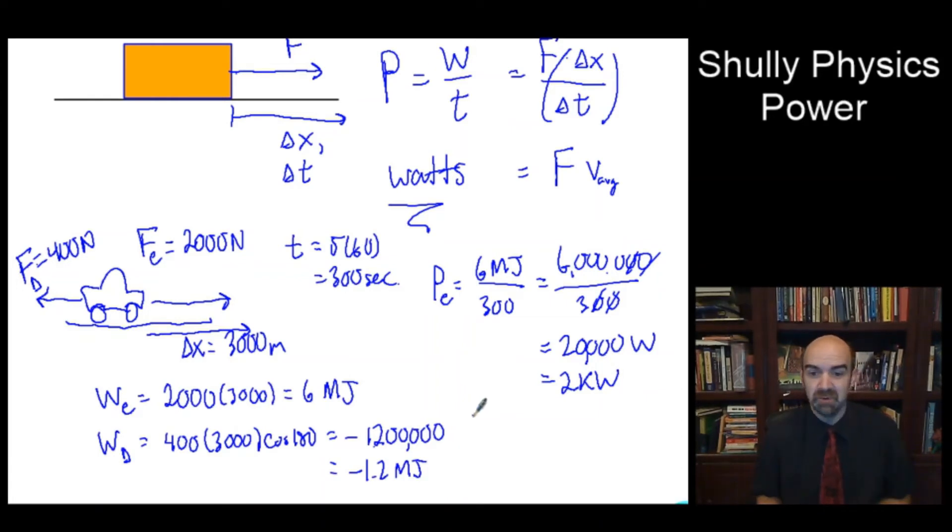And what about the power from drag, the drag power? That would be the 1.2 megajoules. So 1,200,000 joules divided by 300 seconds. I'm going to get a little canceling going on there. I'm left with 12,000 divided by 3 is 4,000. So 4 kilowatts. So we've got 20 kilowatts from the engine, 4 kilowatts from the drag. And our total power, therefore, would be 16 kilowatts. So that's power output of an engine.